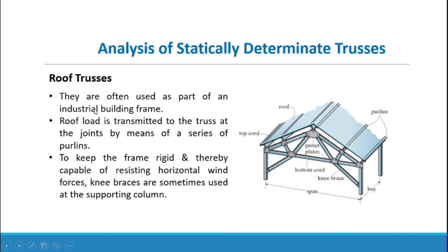Roof trusses are often used as part of an industrial building frame. Roof load is transmitted to the truss at the joints by means of a series of purlins. To keep the frame rigid and capable of resisting horizontal wind forces, knee braces are sometimes used at the supporting columns. The main parts of a roof truss include the roof, purlins, top cord, gusset plates, web members, bottom cord, and knee braces.